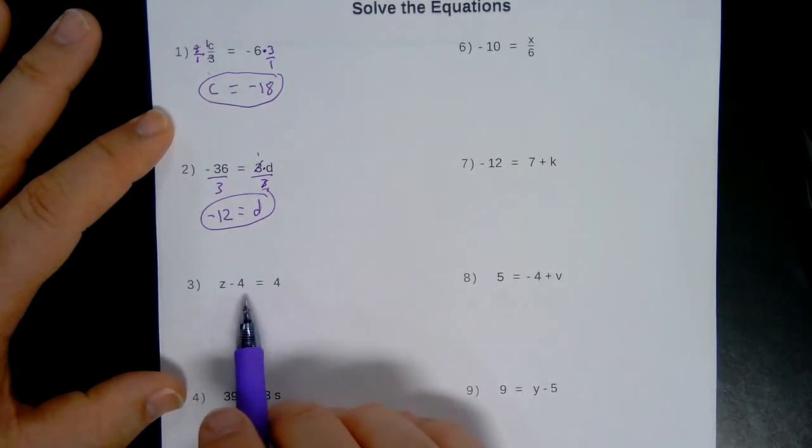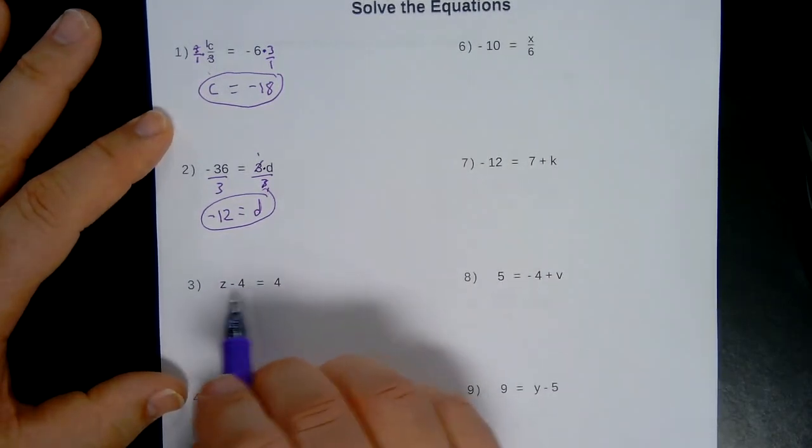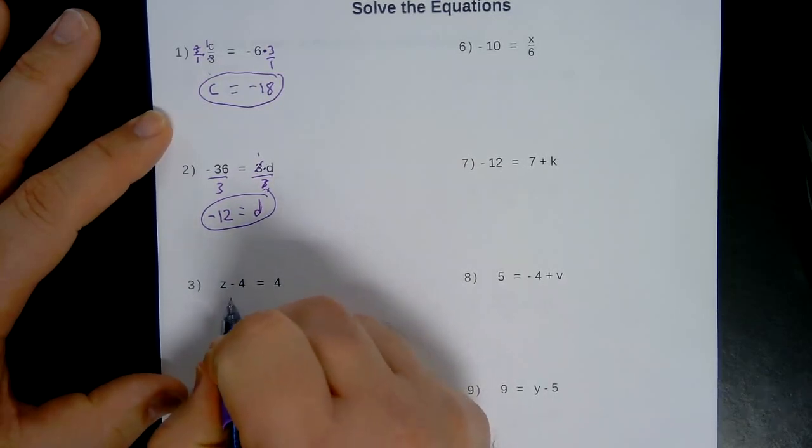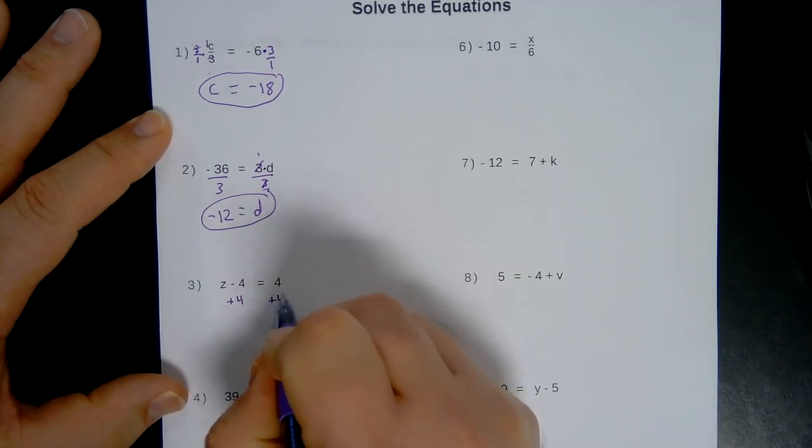Number 3. Oh, here's an easy one. Z minus 4. That's a minus sign. It's equal to 4. This time, the opposite of subtraction is addition. Notice the same thing to both sides of my equation.